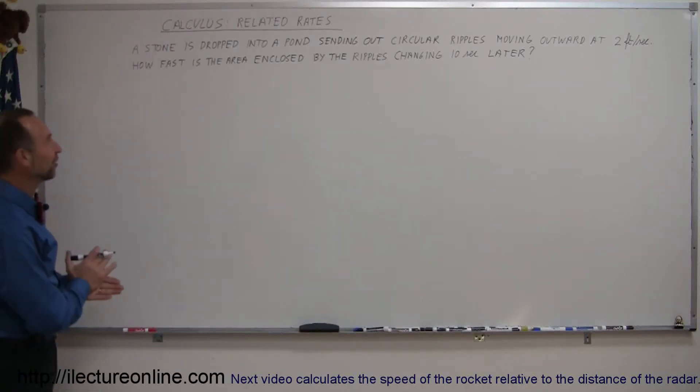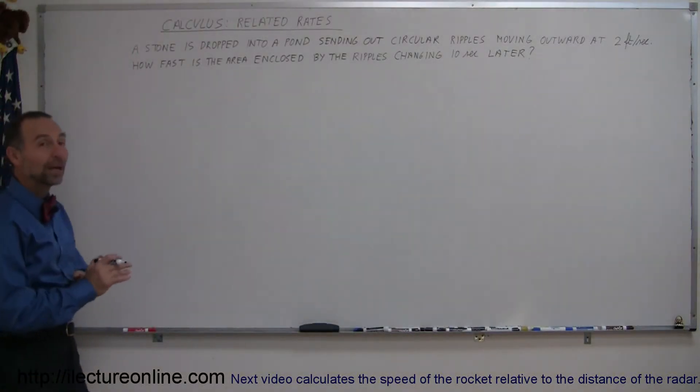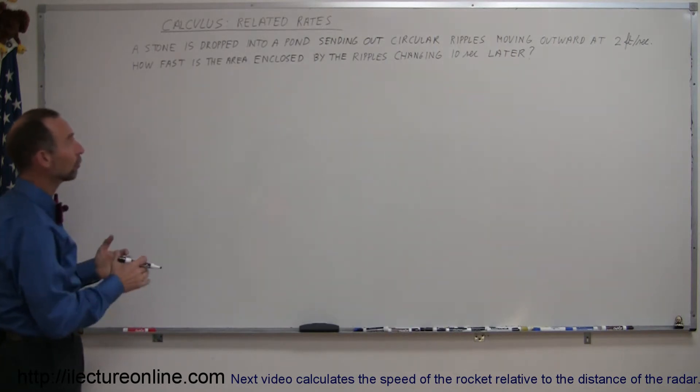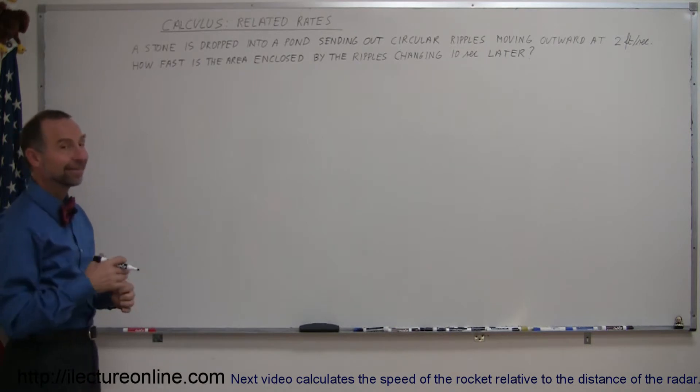Welcome to iLecture Online. Here's another example of how you do related rates in calculus. Let's read the problem. A stone is dropped into a pond sending out circular ripples moving outward at 2 feet per second. How fast is the area enclosed by those ripples changing 10 seconds later?